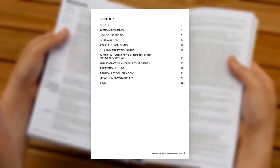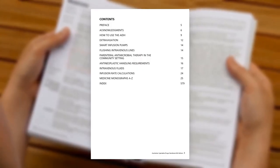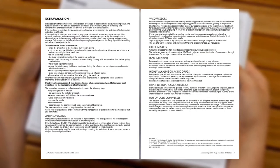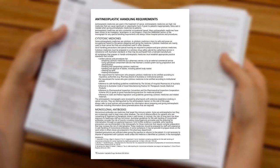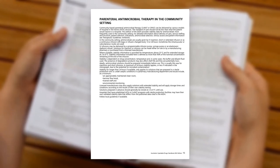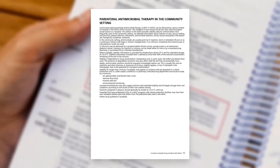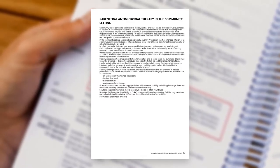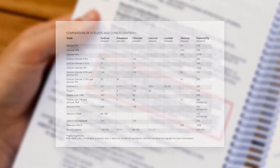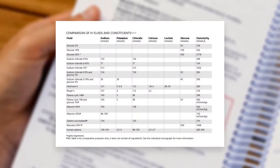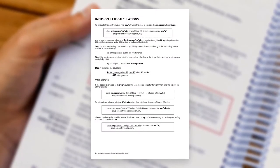The introduction gives general information about extravasation, flushing intravenous lines, safe handling requirements for hazardous drugs, and some background information about parenteral antimicrobial use in the community setting or hospital in the home. It also contains information about the commonly used IV fluids, and a section that explains infusion rate calculations.